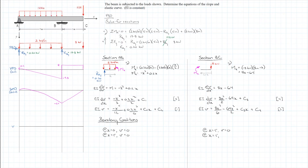So theta_AB equals theta_BC at x equals 5, ensuring a smooth transition. Applying these four boundary and compatibility conditions allows us to resolve all four constants of integration through substitution and back-substitution.